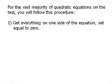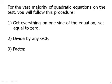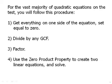For the vast majority of quadratics on the test, you will follow this procedure. First of all, you will get everything on one side of the equation set equal to 0. Then you will divide off any greatest common factor. You will factor it into a product of linear binomials. And then use the 0 product property to create two linear equations and solve each one of them separately. So this is the procedure.